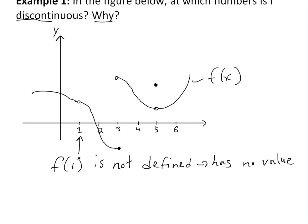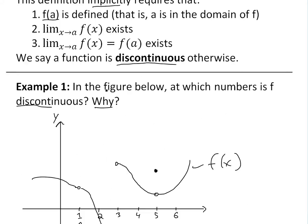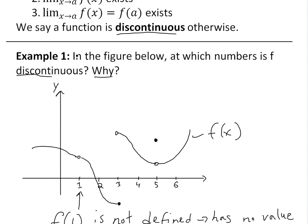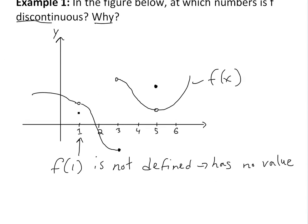Since f(1) has no value, you can't satisfy requirement one, so it's not continuous. If we keep going, it's all continuous up to x=3, where there's a big jump. This point is defined and equals f(3).